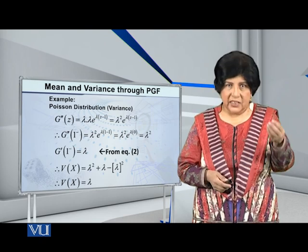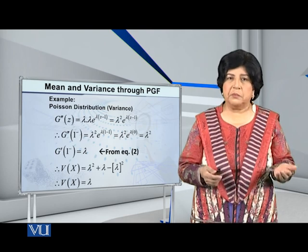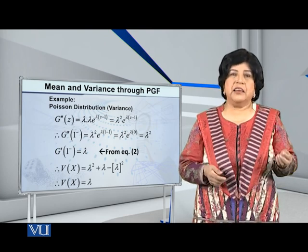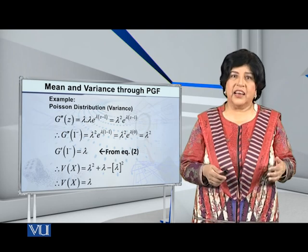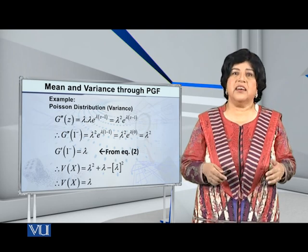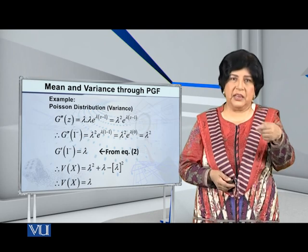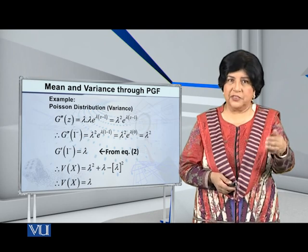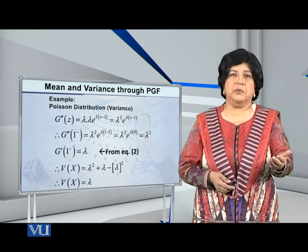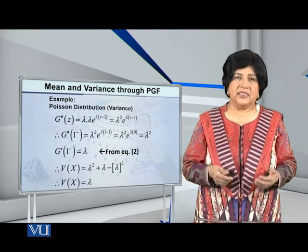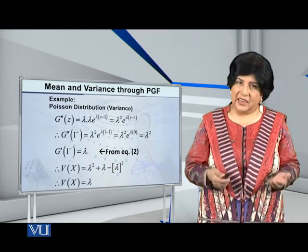We know from elementary probability that for the Poisson distribution, the mean and variance are equal. And we have just confirmed this: the mean came out to be lambda, and now the variance has also come out to be lambda. This illustrates how both the mean and variance can be derived through the probability generating function.